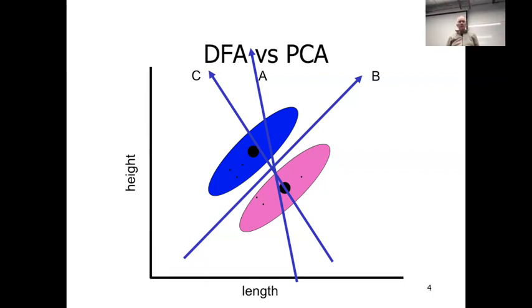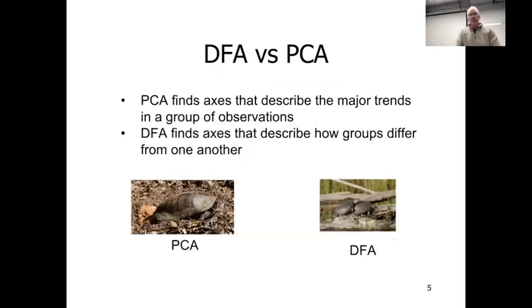So, again, in both analyses, you're looking for an axis. In PCA, you're looking for that axis where you put all the points along and have the maximum possible scatter. With DFA, you're finding the axis where the points best distinguish the groups. So PCA finds axes that describe the major trends in a group of observations. DFA finds axes that describe how the groups differ from one another.